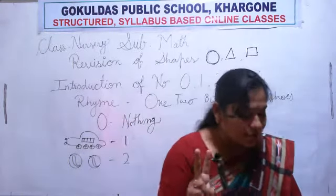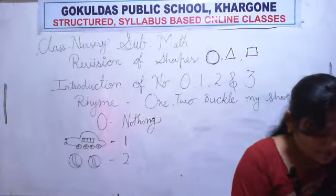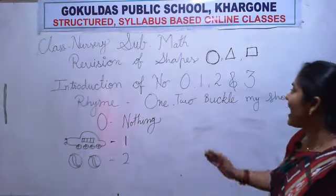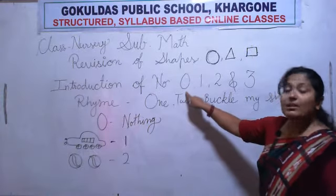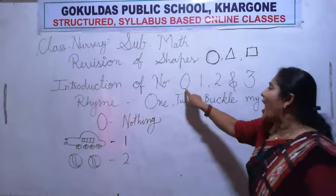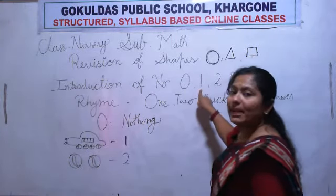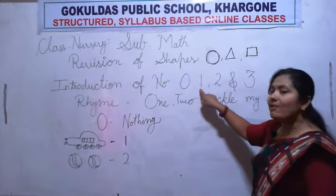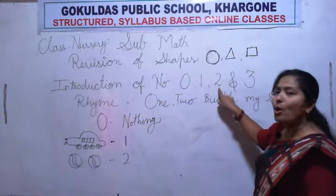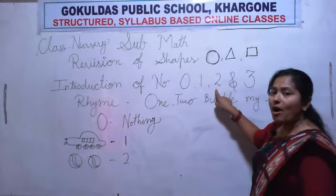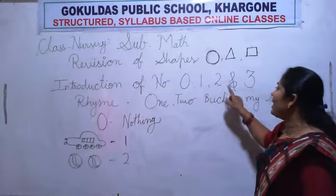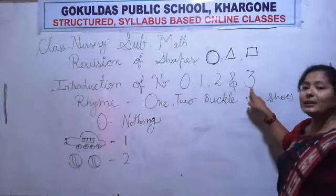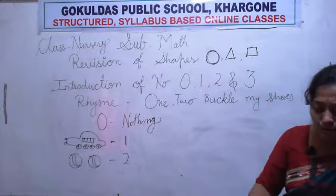Very good students. Now — which number is next? After number zero, which number is coming? One. After number one, which number is coming? Two. After number two, which number is coming? Three. Which number is coming? Three.